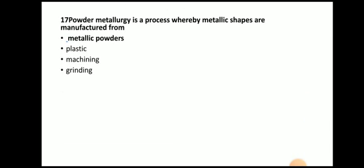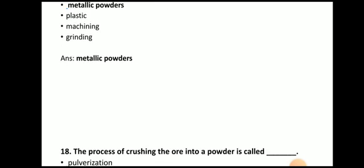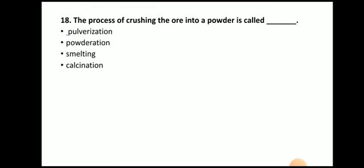Next question: Powder metallurgy is the process whereby metallic shapes are manufactured from metallic powder — we are manufacturing metallic components with metallic powder. Next question: The process of crushing the ore into powder is called? The answer is pulverization — the process of converting ore into powder is known as pulverization.